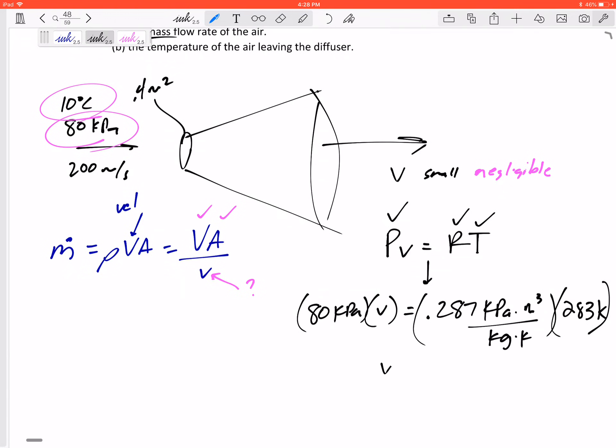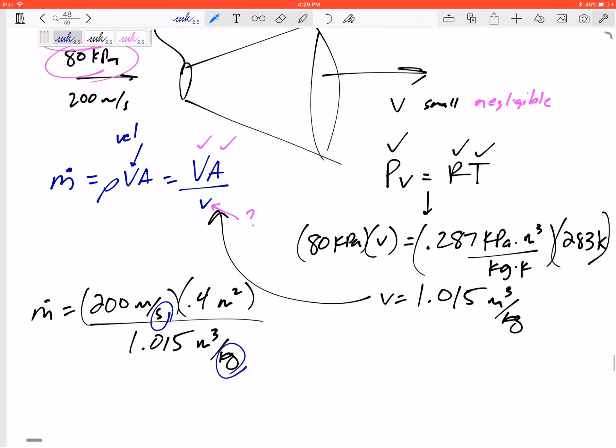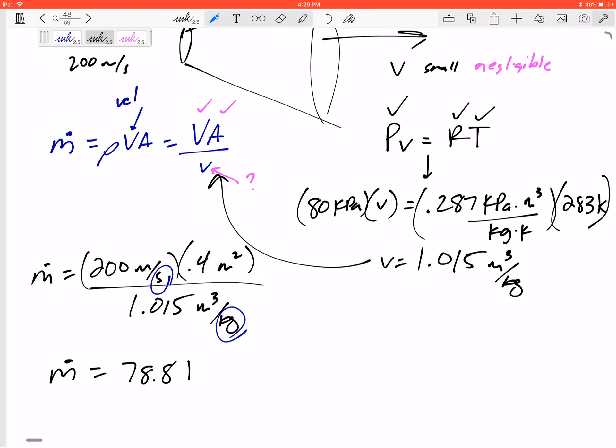There we go, we've got specific volume of 1.015 meters cubed per kilogram. Then we can plug that in and find m dot. M dot is velocity 200 meters per second times cross-sectional area 0.4 meters squared divided by specific volume 1.015 meters cubed per kilogram. Meters, meters, meters cubed all cancel out, and we're left with kilograms in the denominator and seconds just in the denominator. We're left with m dot equals 78.8 kilograms per second.